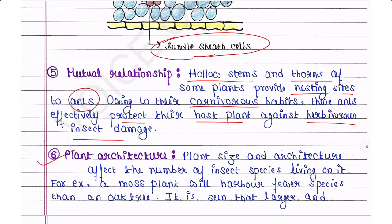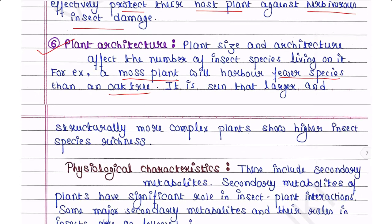Plant architecture: plant size and architecture affect the number of insect species living on it. For example, a moss plant will harbor fewer species than an oak tree. Larger and structurally more complex plants show higher insect species richness — they are more favorable for insects.